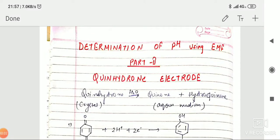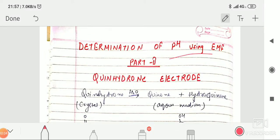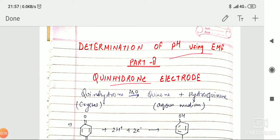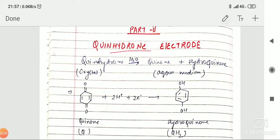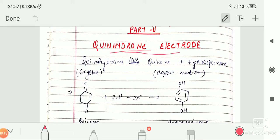In this video, we will determine the pH of the given solution using the quinhydron electrode. In the previous video, we used the hydrogen electrode, and in this video we will use the quinhydron electrode.